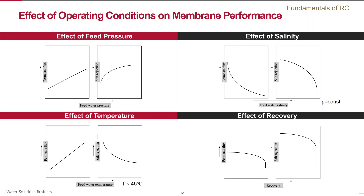The next figure shows the effect of salinity on flux and rejection under conditions of constant pressure. Salinity affects both flux and rejection directly: as salinity increases, the driving force for water flux decreases because of the high osmotic pressure, while the solute flux increases because of the high concentration gradient. Therefore, the apparent system rejection goes down. Temperature effects work in the opposite direction for flux and rejection.